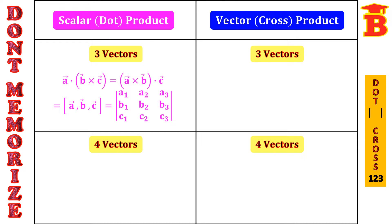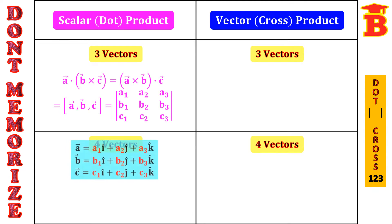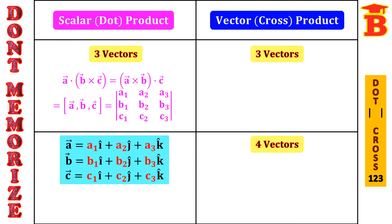A dot (B cross C) is the same as (A cross B) dot C. We can write this in a square bracket as [A, B, C] and we say that it is a box product. A vector is A1i + A2j + A3k, B vector is B1i + B2j + B3k, and C vector is C1i + C2j + C3k.